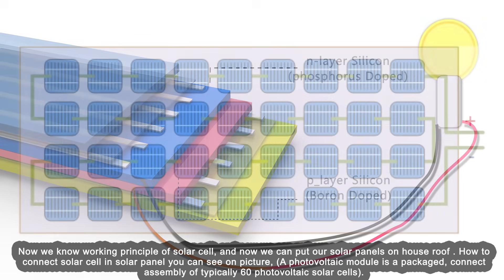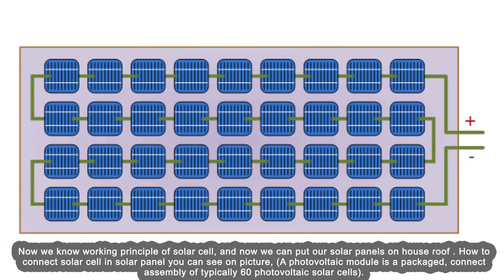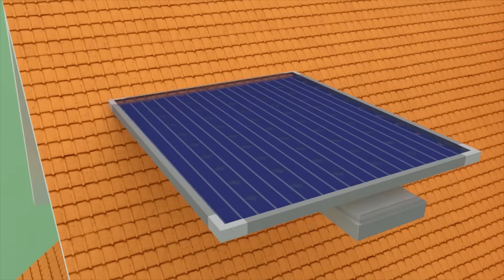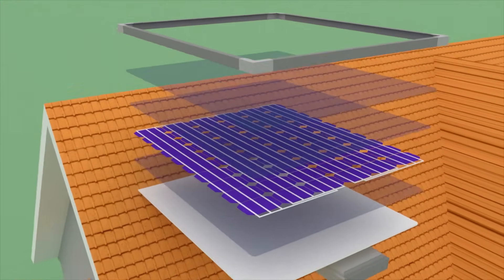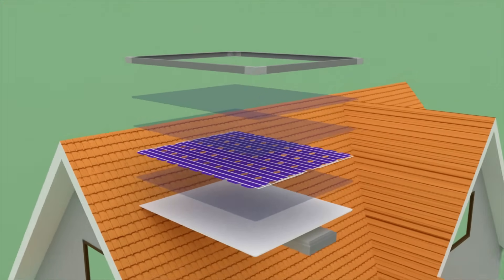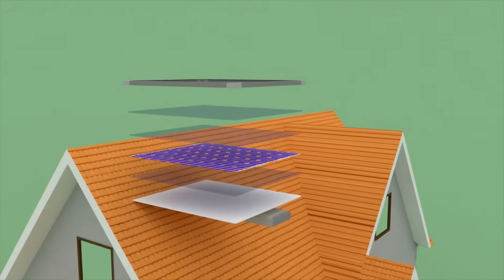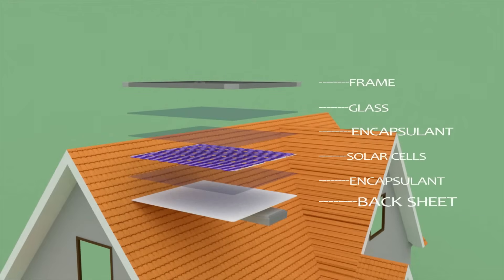Now we know the working principle of the solar cell, and we can put our solar panels on a house roof. A photovoltaic module is a packaged connected assembly of typically 60 photovoltaic solar cells. You can see the construction of the panel with junction box.